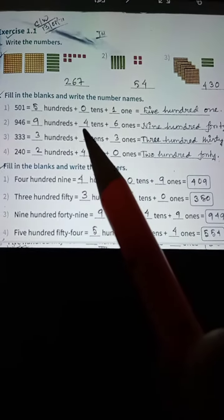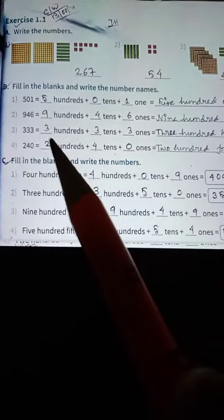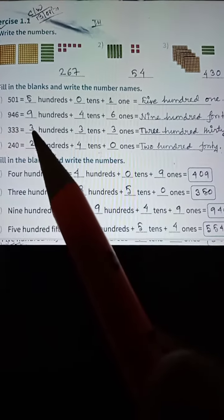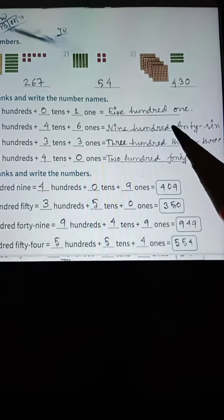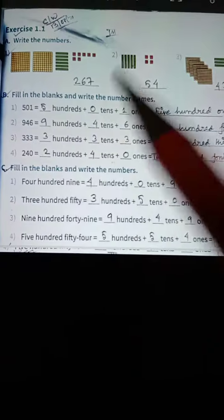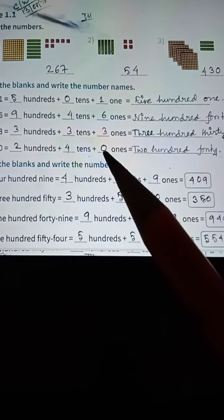Next one, 333, so 3 hundreds plus 3 tens plus 3 ones, three hundred thirty-three. Next one is 240, so 2 hundreds plus 4 tens plus 0 ones, 240.